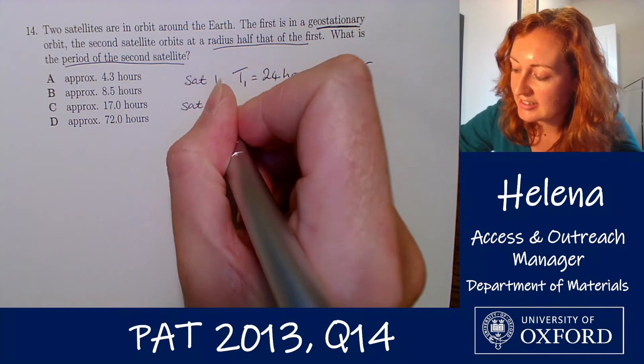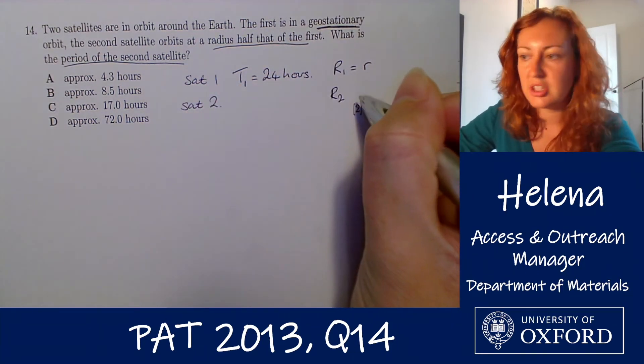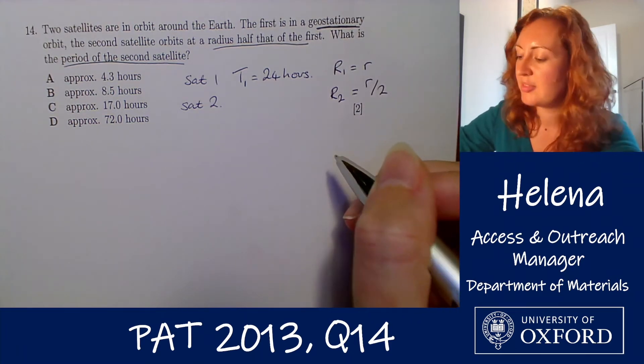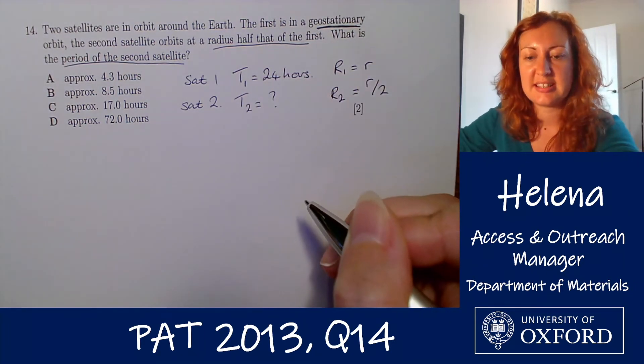Now the second satellite, satellite 2, we're told its radius r2 is half that of the first satellite so it'll be little r over 2 and we're being asked to find its orbital period here t2.